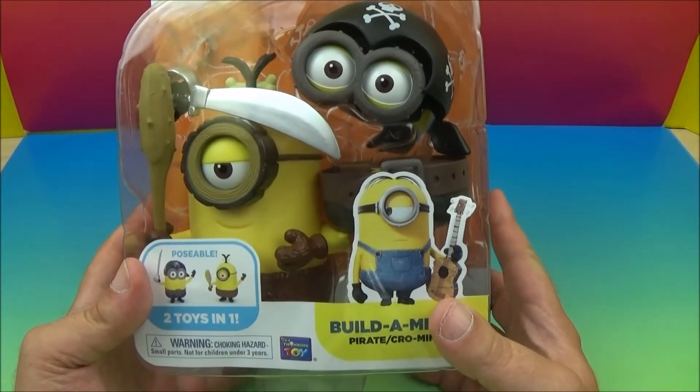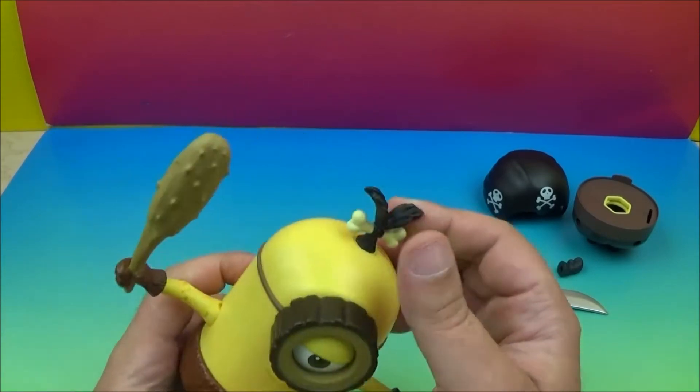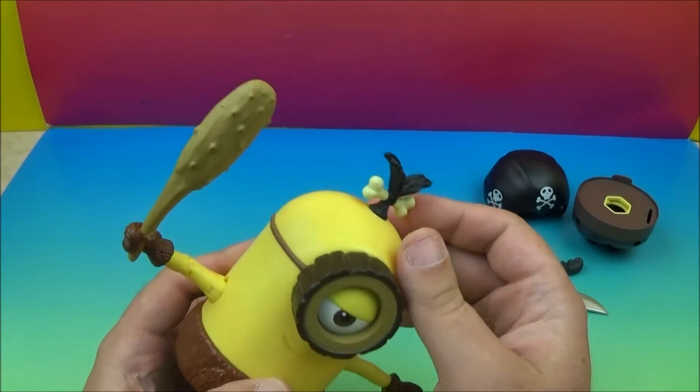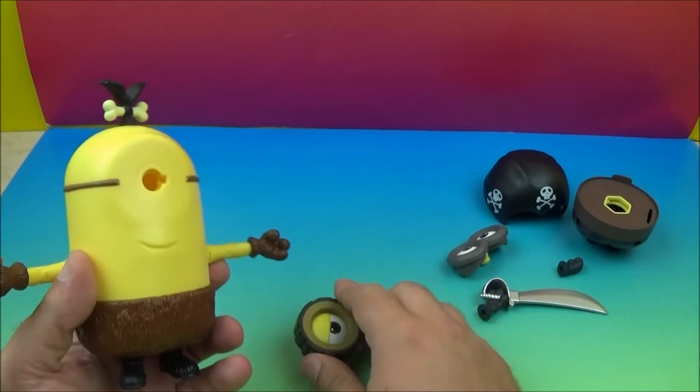And so let's get them out of the packaging and have some fun. Wow, so here's the Crow Minion. He's pretty cool. I like that. So he's got his little bone in the hair up here. He's got his big old club. He's got a wooden goggle that comes right off of there.